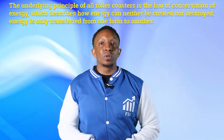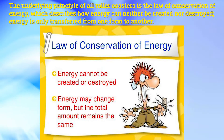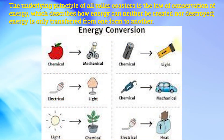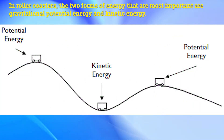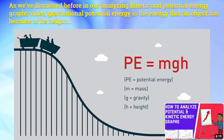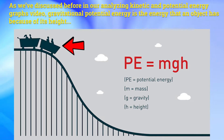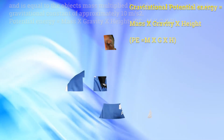The underlying principle of all roller coasters is the law of conservation of energy, which describes how energy can neither be created nor destroyed — energy is only transferred from one form to another. In roller coasters, the two forms of energy that are most important are gravitational potential energy and kinetic energy. As we've discussed before in our Analyzing Kinetic and Potential Energy Graphs video, gravitational potential energy is the energy that an object has because of its height and is equal to the object's mass multiplied by its height multiplied by its gravitational constant of approximately 10 meters per second squared.